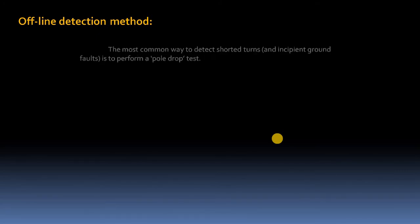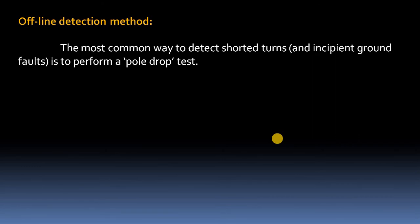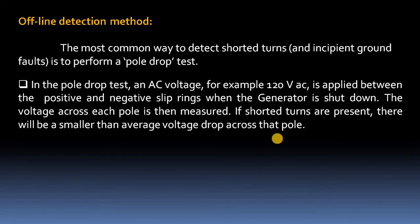In the offline detection method, the pole drop test is very simple and easy. The common way to detect shorted turns is to perform a pole drop test. In the pole drop test, we apply an AC voltage to the rotor winding at the slip rings and measure the voltage across each pole. If any pole has a voltage drop less than the average voltage, that pole has shorted turns.